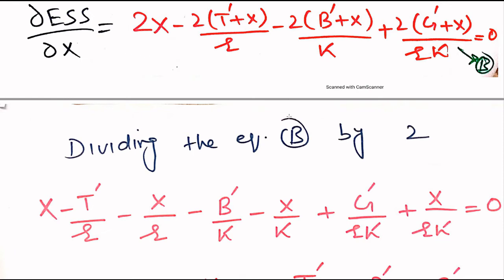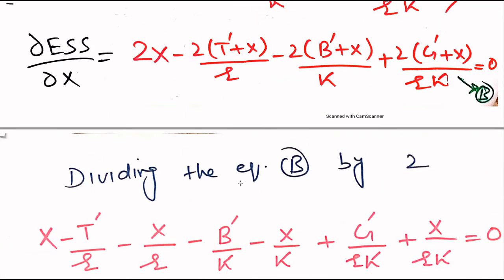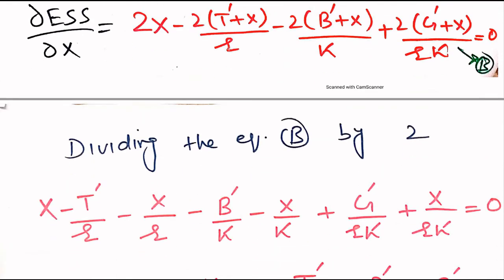Equating this term to zero, we then divide both sides by 2, since 2 appears with every term — these cancel out and 0 over 2 is 0. On the right side it equals 0 and we cancel out 2 by dividing both sides by 2. Now we separate the terms: x minus t prime over r minus x over r minus b prime over k minus x over k plus g prime over rk plus x over rk equals zero.